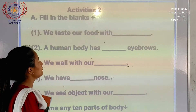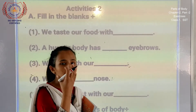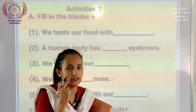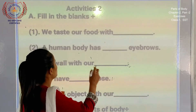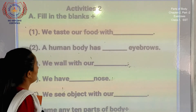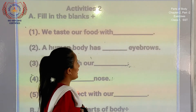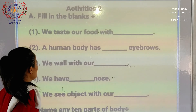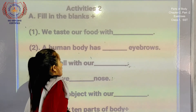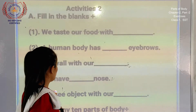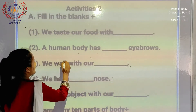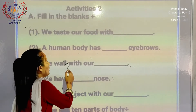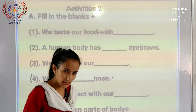Fill in the blanks. Question number one: We taste our food with — hum loko food kaise taste karate hain? Kis se taste aata hai? Mouth se. Hum loko jab mooh mein daalte hain tab taste aata hai. A human body has dash eyebrows — kitne eyebrows hain? We walk with our dash — hum loko kisse chalte hain? Legs se. We walk with our legs.